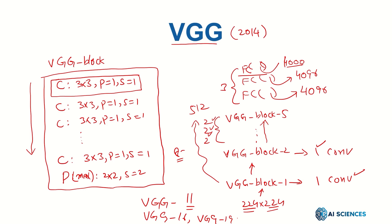The VGG network introduced the concept of VGG blocks, and this block-based view of convolutional neural networks was carried forward in residual networks and Inception nets as well. We will see ResNets and Inception nets in upcoming videos. Hope to see you in the next video.